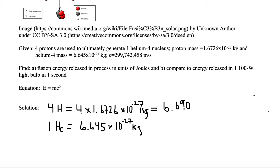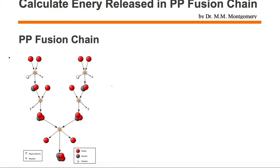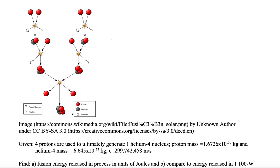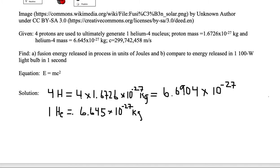4 times 10 to the minus 27, and we see that our 6.69 is greater than 6.645. So we start out with four hydrogen atoms, which has more mass than what we end up with, which is one helium atom. So we lost mass in the process, and that mass is going to be used to be converted into energy by Einstein's famous formula.